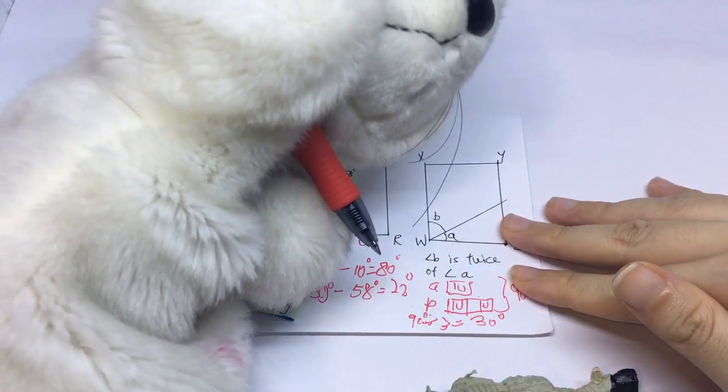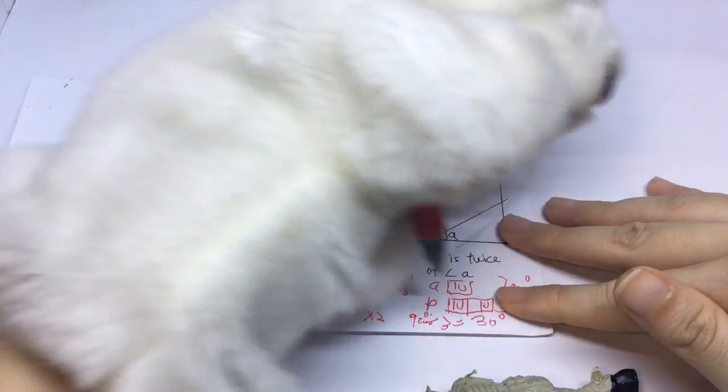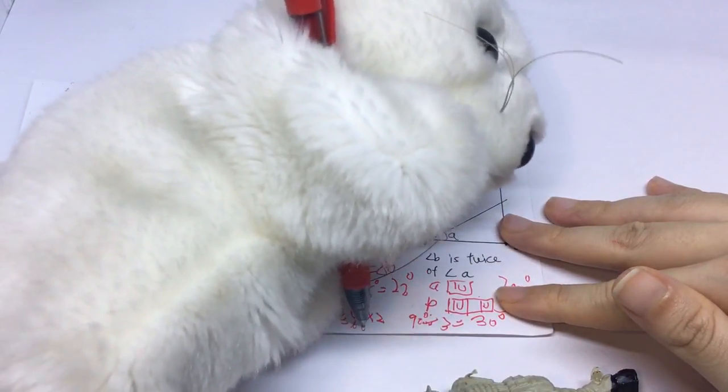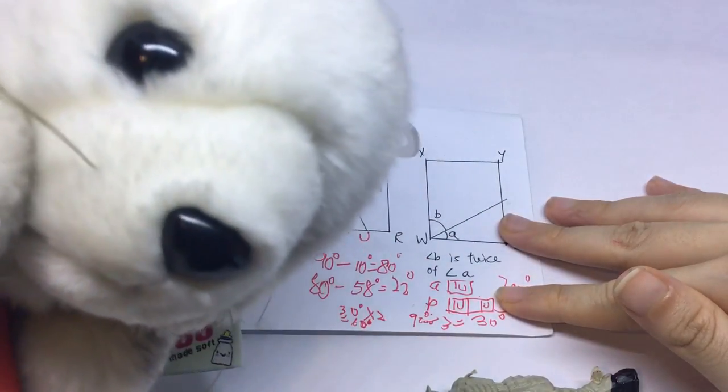So, what is angle B? Thirty degrees times two. Because two units equals to sixty degrees. I'm correct, right?